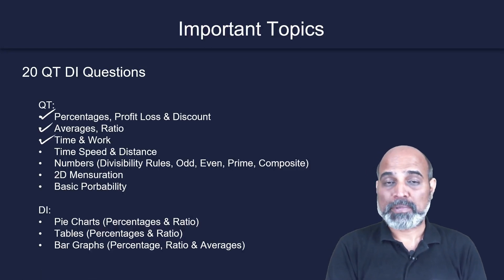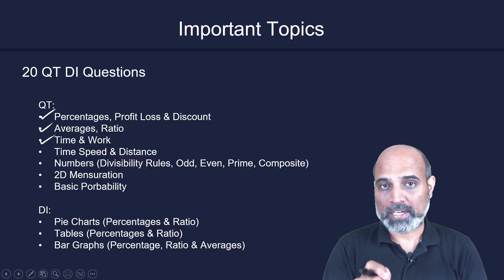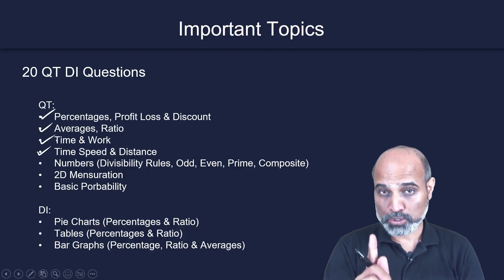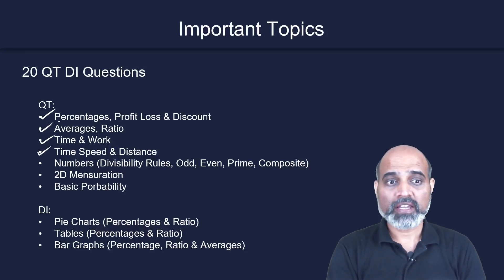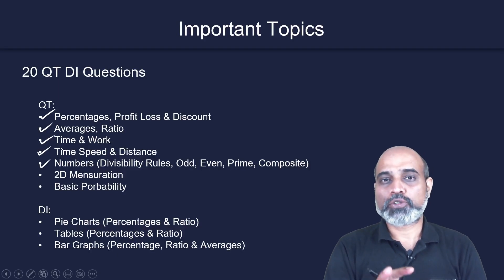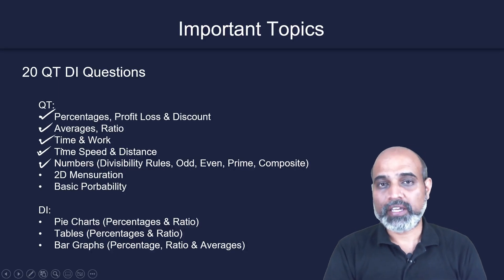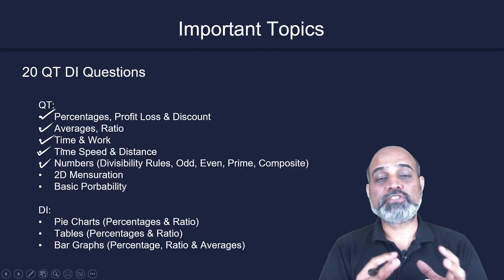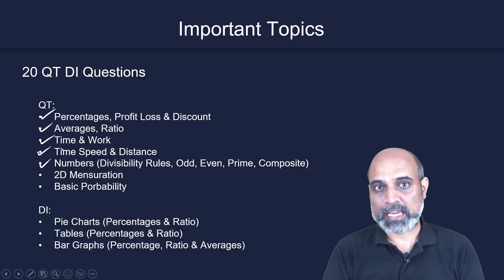Time and work — expect at least one question from time and work, and similarly at least one question from time, speed, and distance. Numbers-based questions are going to be at least two or three, related to either factors or factorization of a number, and may also be related to odd, even, prime, and composite values.